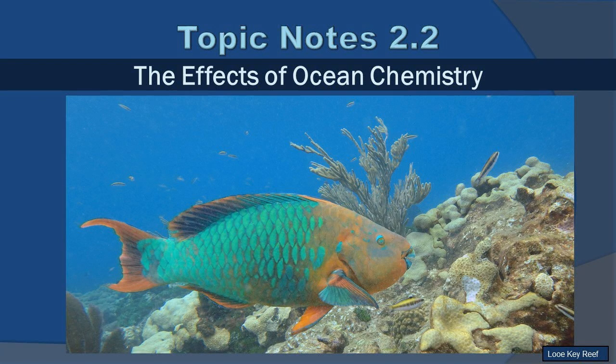Topic notes 2.2: the effects of ocean chemistry. Previously we talked about the chemistry of the ocean — everything from salinity to dissolved gases. Now we're going to talk about how those things impact the natural environment in the marine world. Specifically, you can look at this rainbow parrotfish, which I photographed down at Looe Key Reef in the Keys. Parrotfish, like all other fish, have to deal with the fact that they're swimming in a saltwater environment where osmotic pressure is involved.